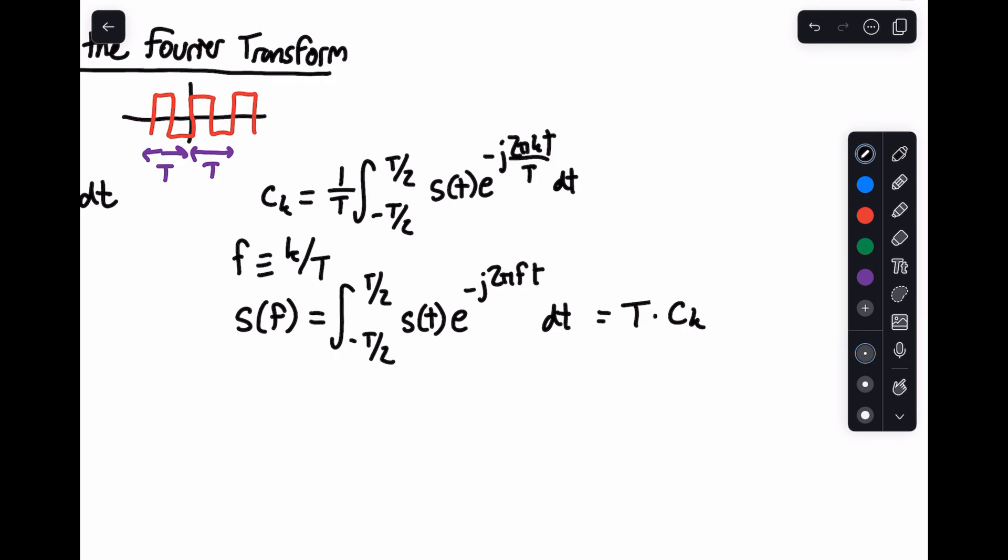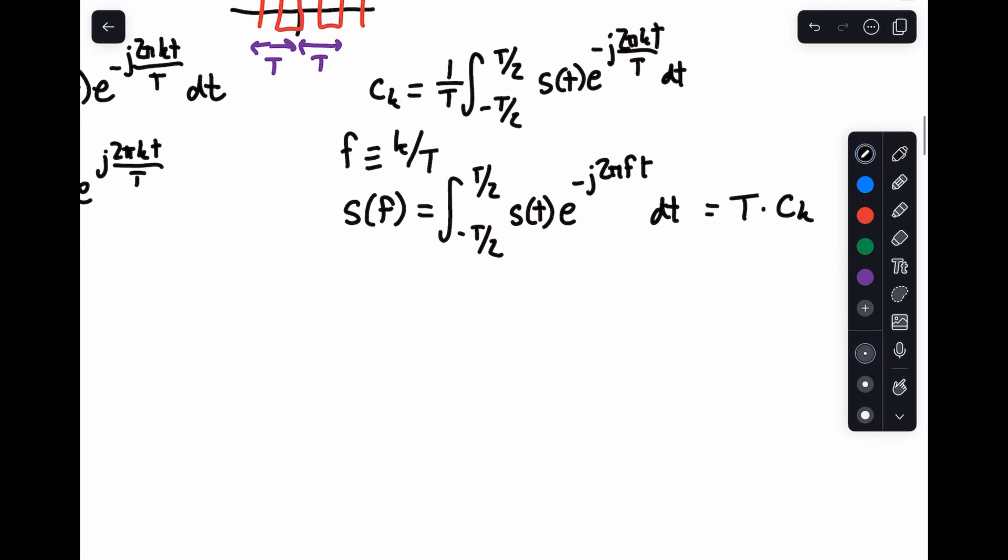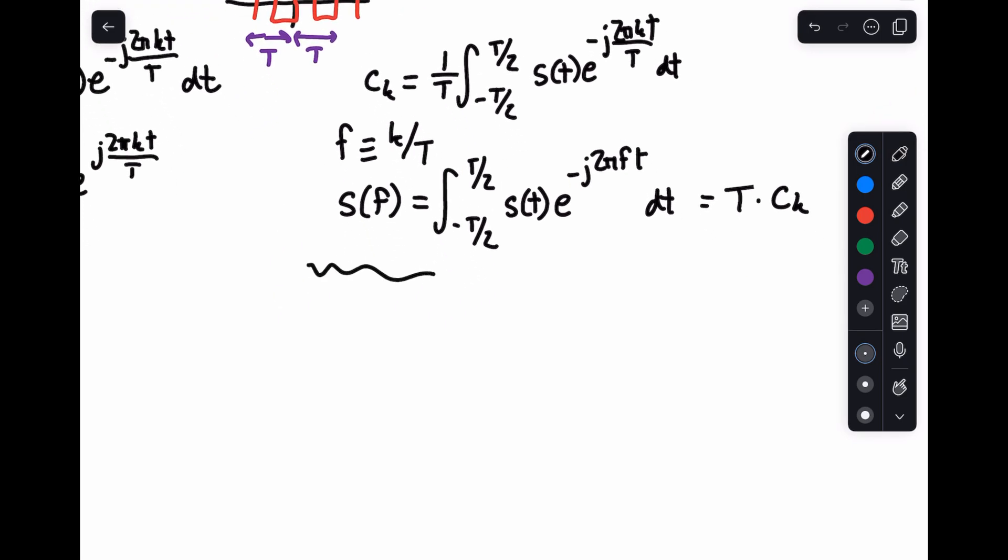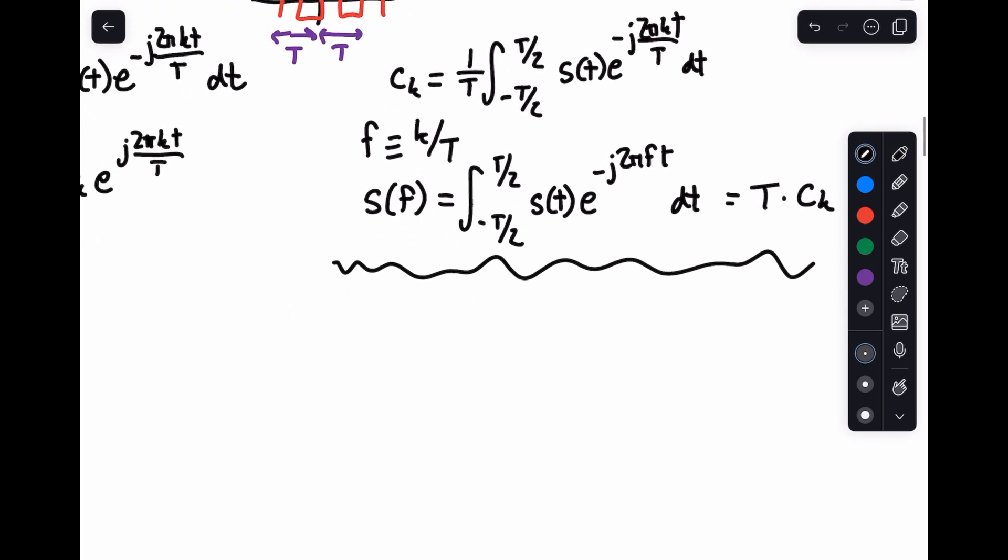The details on this will be clear later. We already have an integral, so we're basically getting ready to take the limit. What we're doing is just moving T around. Now let's look at our inverse case. What we have before is s(t) equals the sum from k equals minus infinity to infinity of c sub k e to the plus j 2π kt over T.